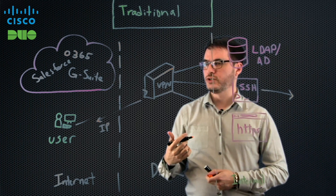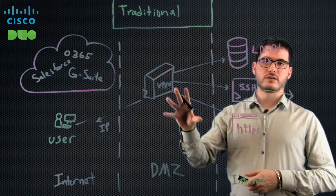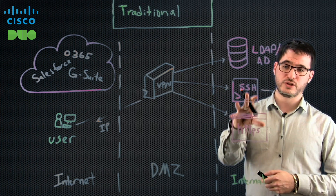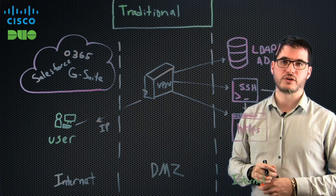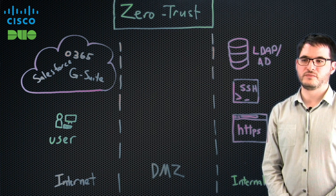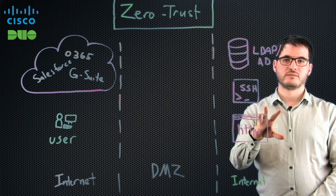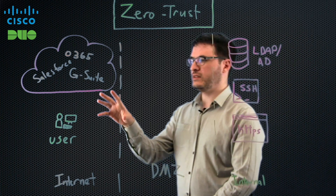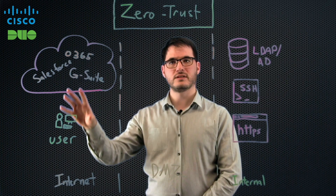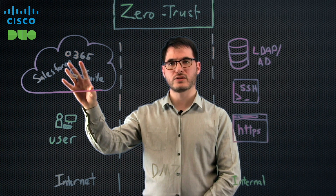So what we're going to do with Zero Trust is look at how this network architecture changes, and talk about how that helps not only improve security, but also the end user experience. Now, in the world of Zero Trust, we have to address what's going on on-premise, but also — in that previous VPN model — we didn't address the side of the picture where users are actually going directly to cloud applications.